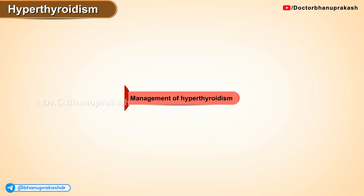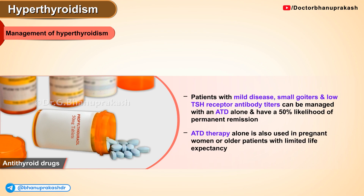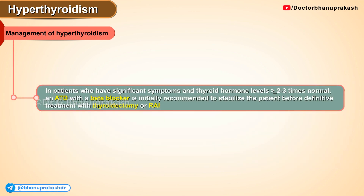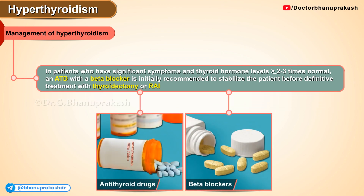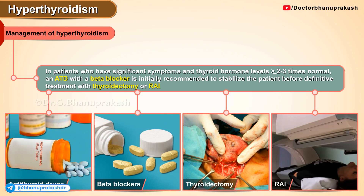Management of hyperthyroidism in general: for patients with mild disease, small goiters, and low TSH receptor antibody titers, treatment is with antithyroid drugs alone, and they have at least 50% likelihood of permanent remission. Antithyroid drug therapy alone is also used in pregnant women or older patients with limited life expectancy. In patients who have significant symptoms with thyroid hormone levels at least two to three times the normal, an antithyroid drug with a beta blocker is recommended to stabilize the patient before definitive treatment with thyroidectomy or radioactive iodine ablation.